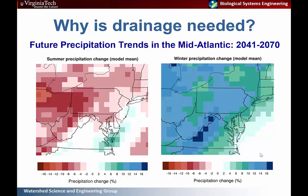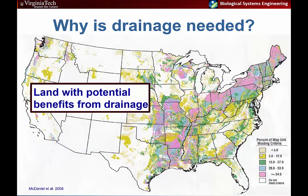In addition to changes in the quantity and timing of precipitation, we're also looking at an increased likelihood of more extreme events. We can have increased periods of drought and heavier rainfall intensities, and those heavier rainfall intensities can drive the need for drainage in this region as well.